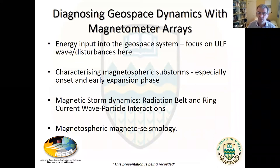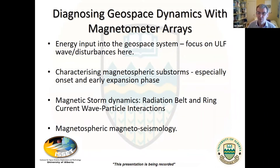I'm going to use substorms as one example, then talk about the potential role for wave-particle interactions in the radiation belt and the ring current. If time allows, I'll mention the other end of this wave philosophy — instead of using waves to diagnose dynamics, inverting the problem to use the properties of waves as they propagate through the medium as a way to remote sense properties of that medium. That might be called magnetoseismology, and you can do elements of that using these ground networks.